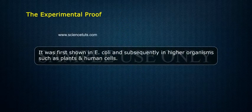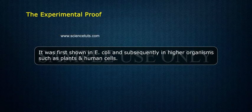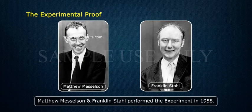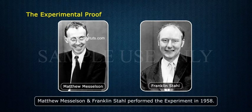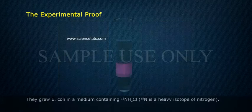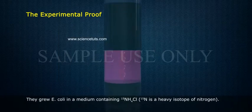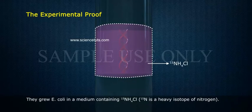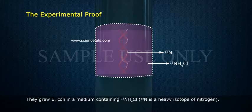The experimental proof was first shown in E. coli and subsequently in higher organisms, such as plants and human cells. Matthew Meselson and Franklin Stahl performed the experiment in 1958. They grew E. coli in a medium containing 15-NH4Cl. 15-N is a heavy isotope of nitrogen.